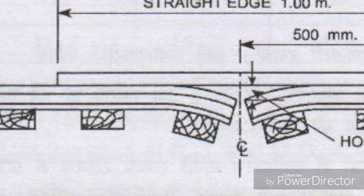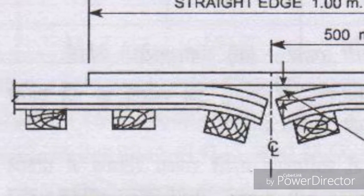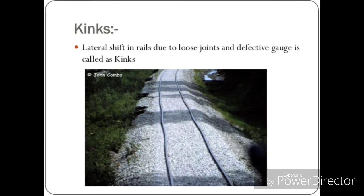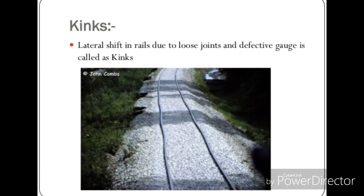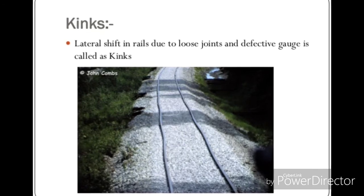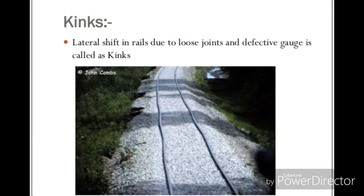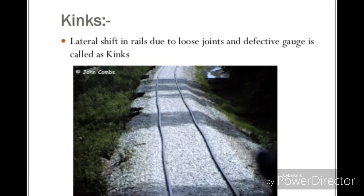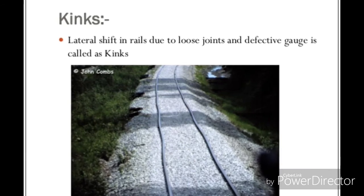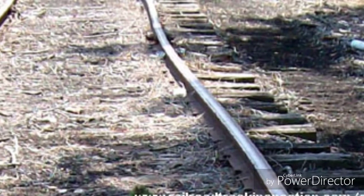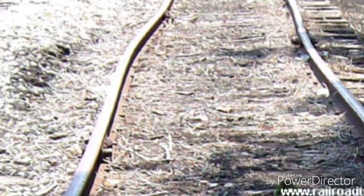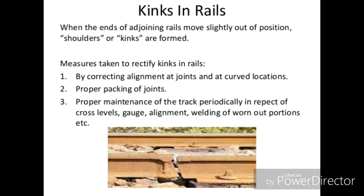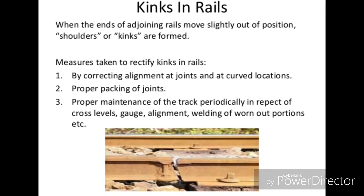The third defect is kinks in rails. When the ends of adjoining rails move slightly out of position, shoulders or kinks are formed. The causes may be due to loose packing of the joints, defective gauges and alignment, defective cross levels, uneven wear of rail ends, and these kinks are formed at the joints or anywhere in the rail.